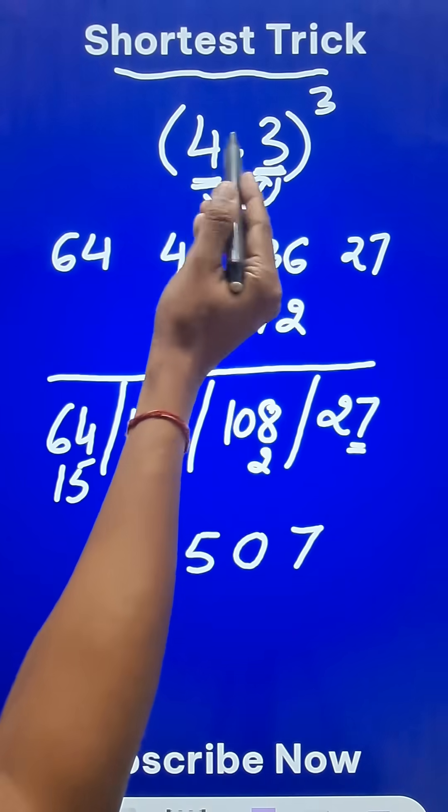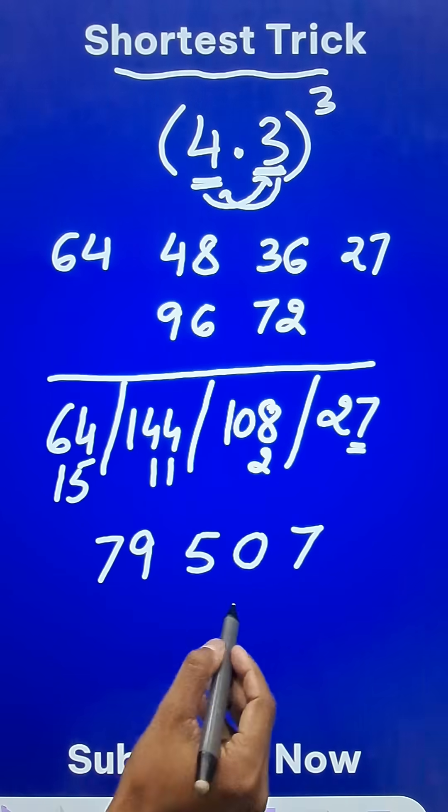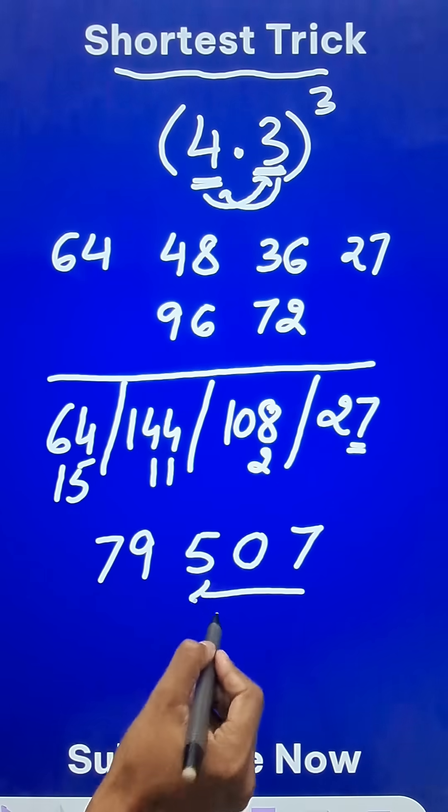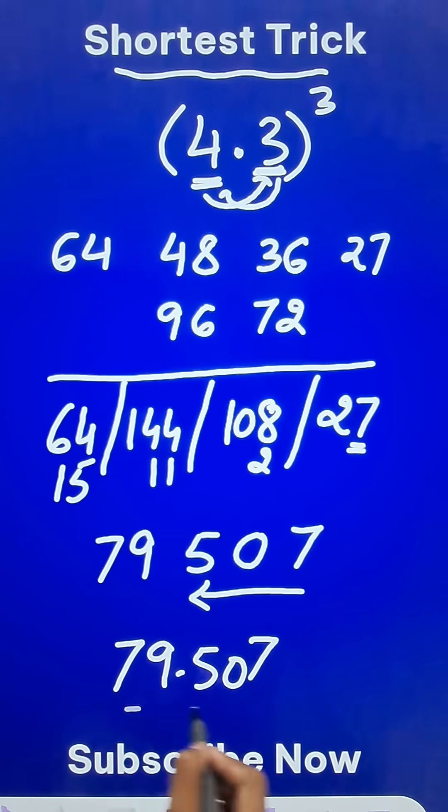Since it is 4.3 times 4.3 times 4.3 having three decimal places, we will put a decimal three digits from the right hand side, giving us 79.507 as the cube of 4.3.